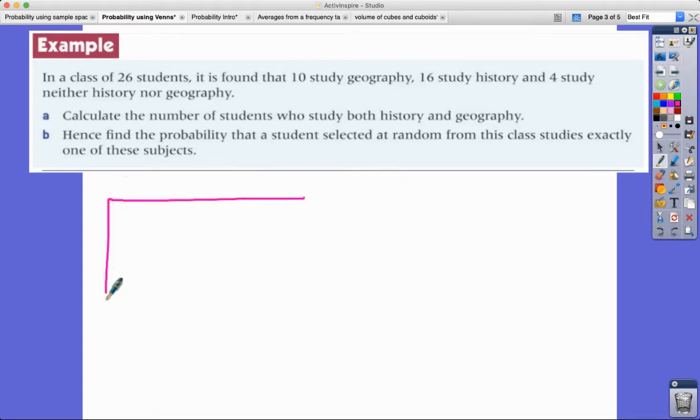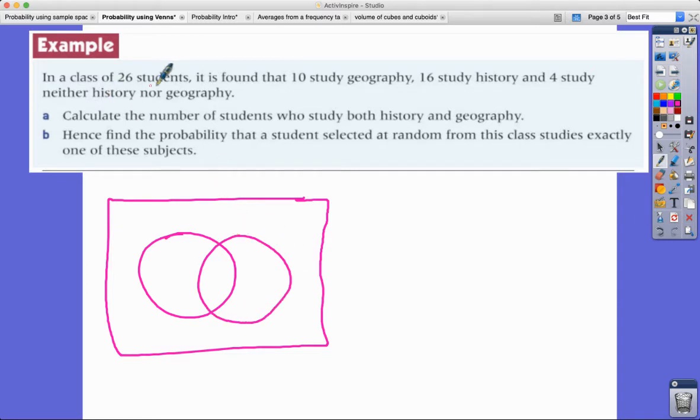In this instance we need a bit of algebra actually. So in a class of 26 students it's found that 10 study geography, 16 study history and 4 study neither. So I'm going to put in whatever information I can. I know that 4 is going to go outside, I know that generally there's going to be 10 people who do geography and 16 do history.